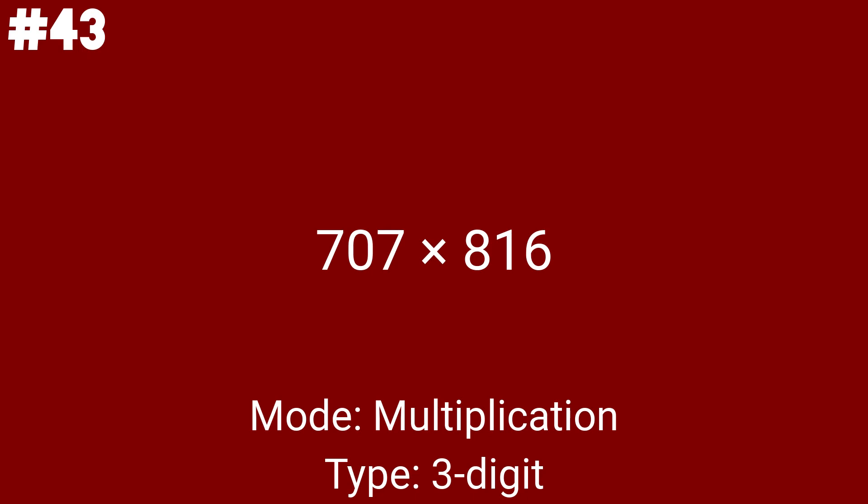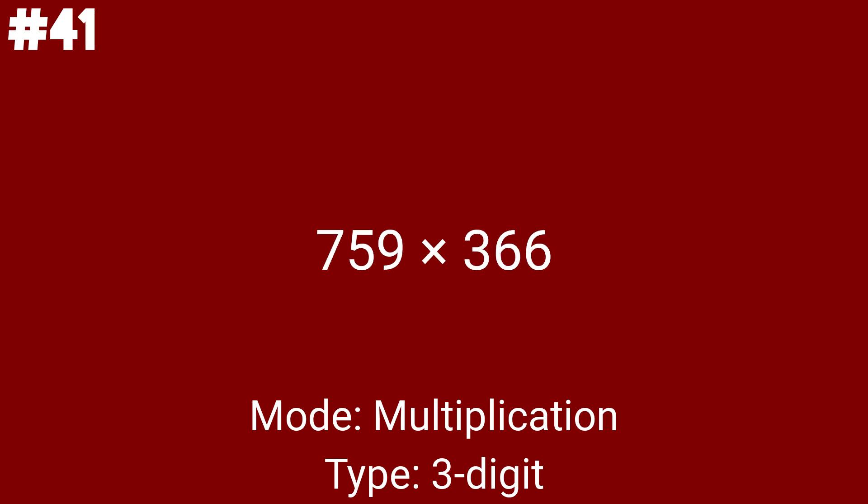Number 13 on this list is 707 times 816. This time there's a 0 in the middle of the first number. We've got 2 more problems until the second half of the multiplication problems. What's interesting about 420 times 72 is that only one number has a 0 at the end — multiply 42 times 72 and then multiply by 10. Problem number 15 is 759 times 366, the last triple-digit multiplication problem. We are at the halfway mark.